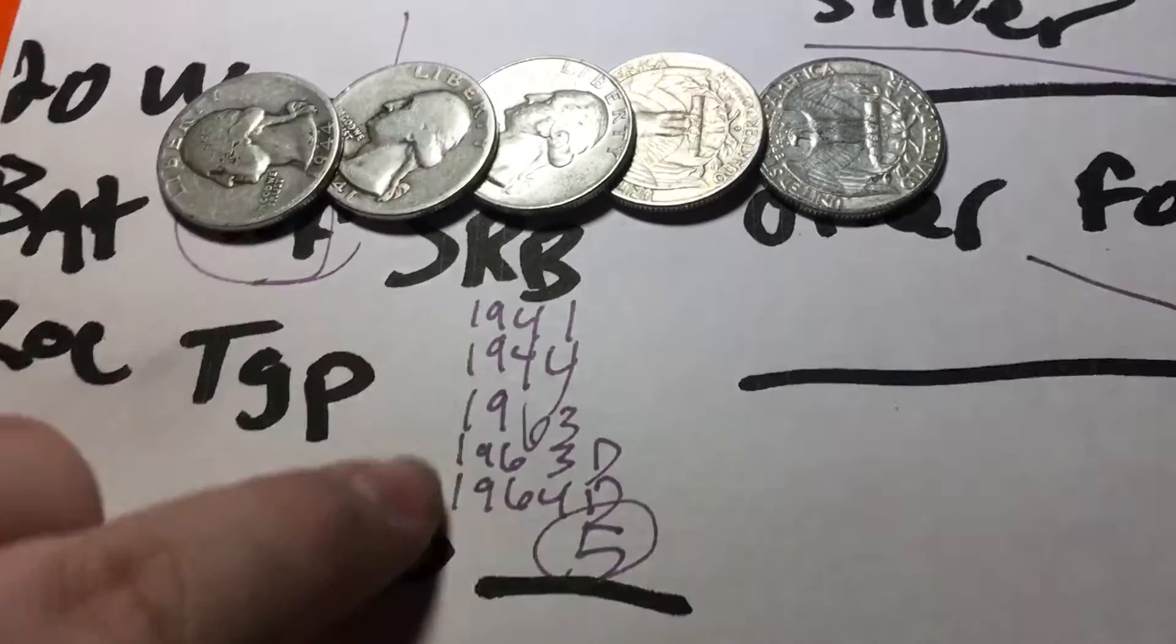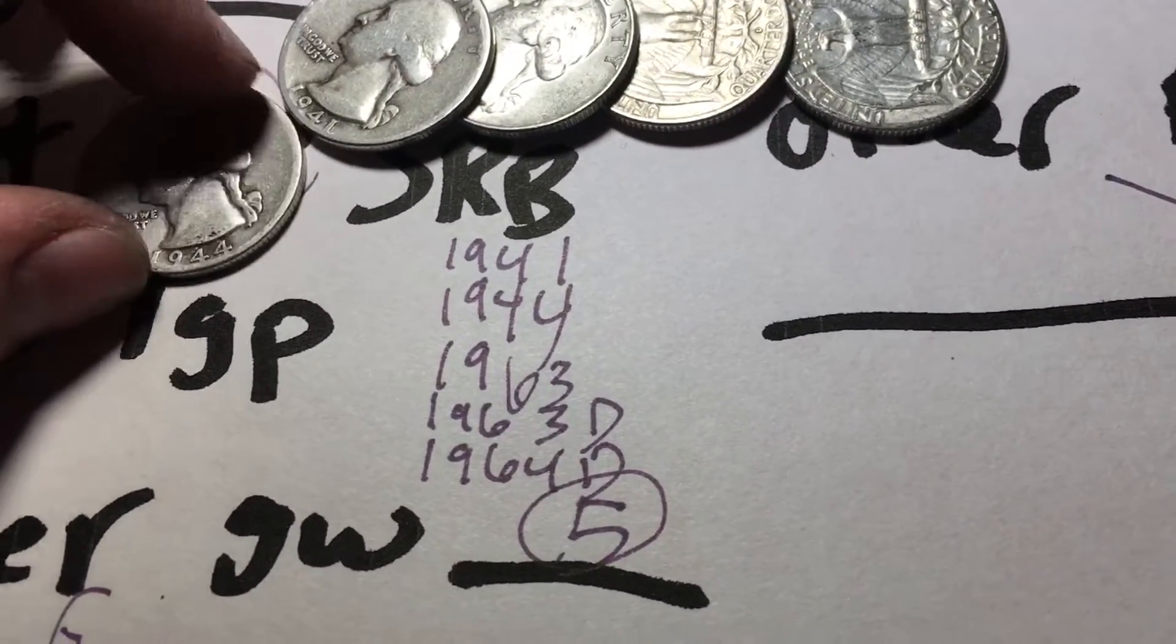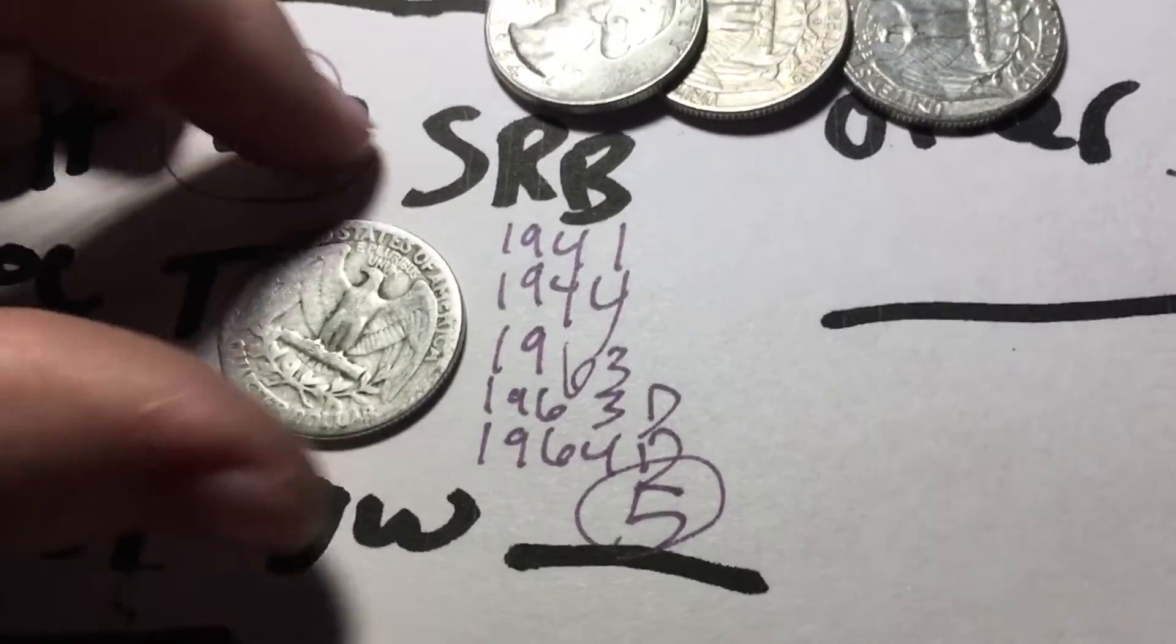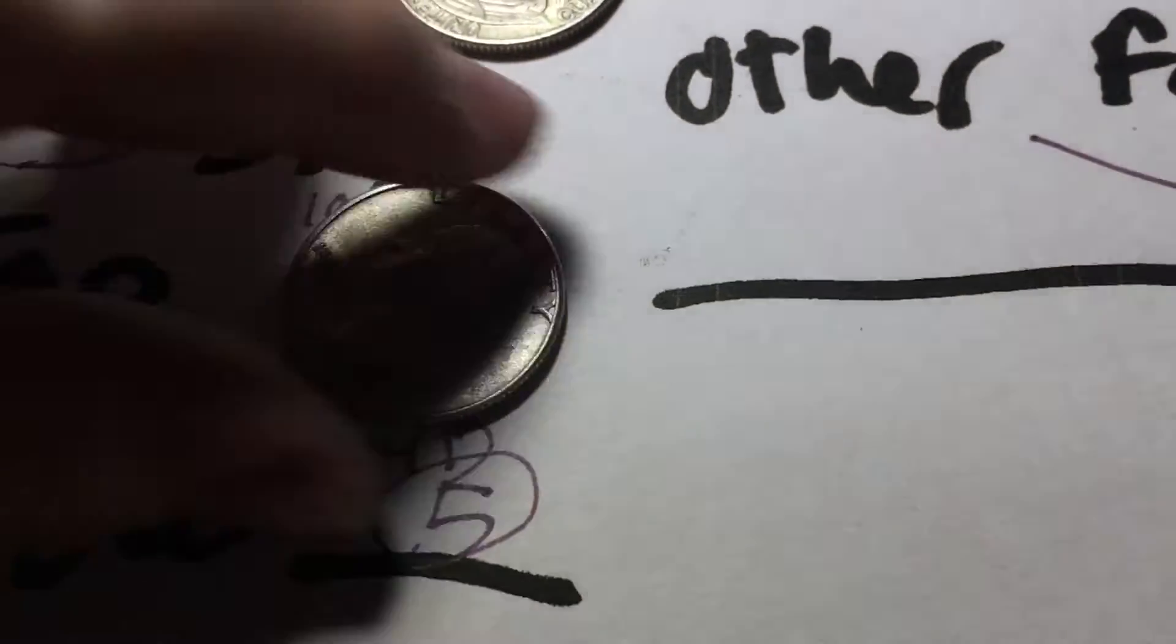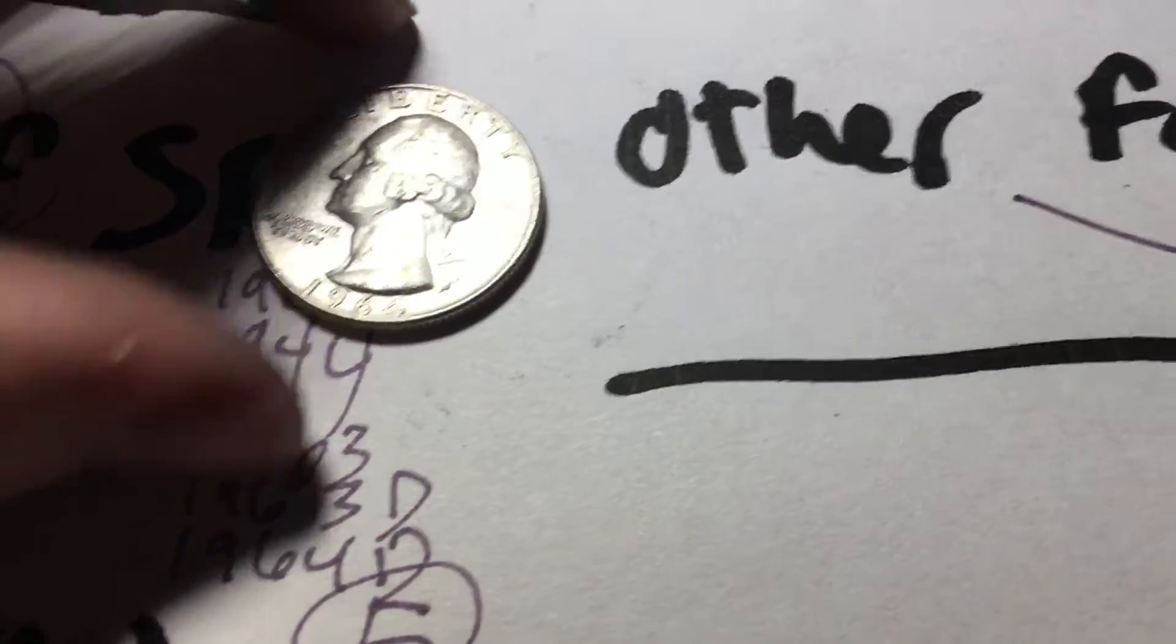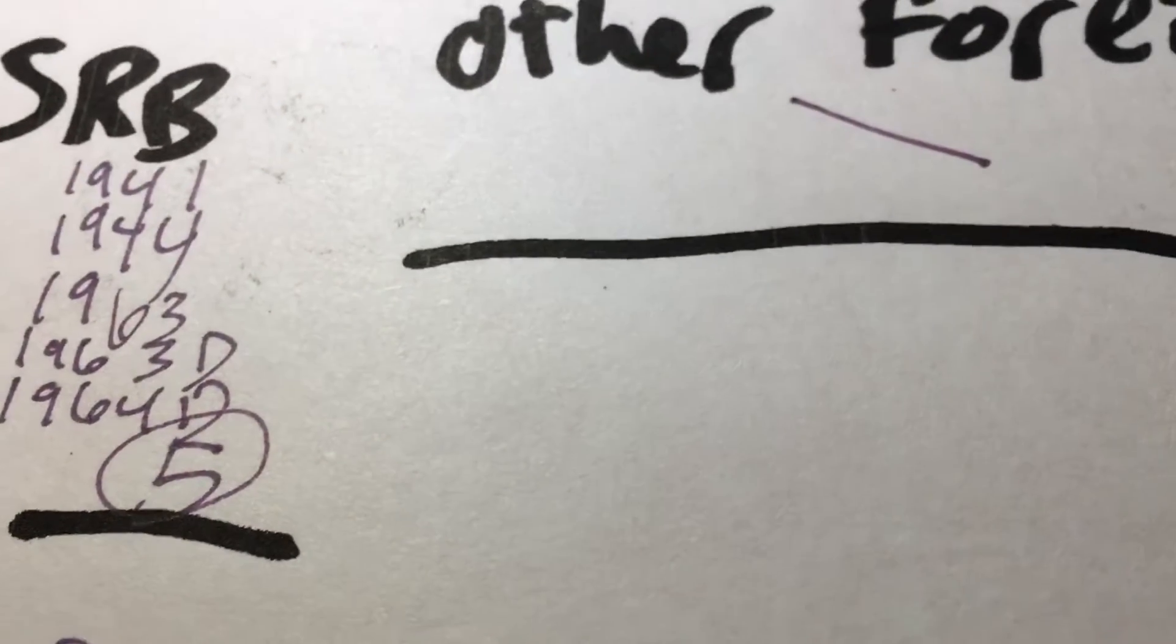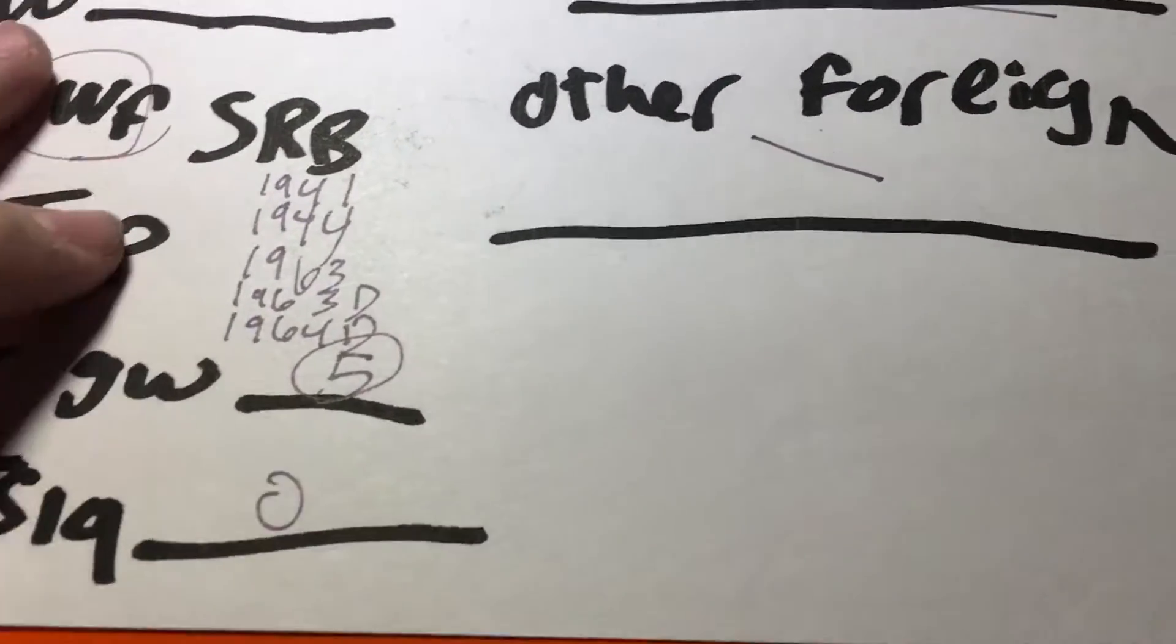Got a 1941 Philadelphia, a '44 Philadelphia, a '63 Philadelphia, a '63 Denver, and a pretty good looking '64 Denver. So those are cool. Five more silver quarters on the year, on the day. Booyah.